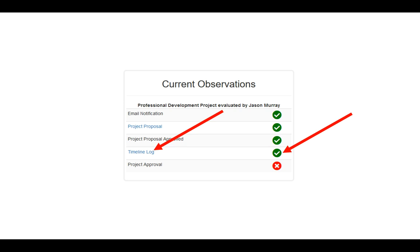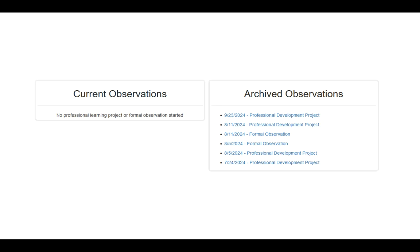Once your principal approves your final project, under current observations it will say no professional learning project or formal observation started because it has been approved, completed, and closed. It will now show up in archived observations. This completes the professional learning project process. If you have any questions, please feel free to reach out to Technology Services. Thank you.